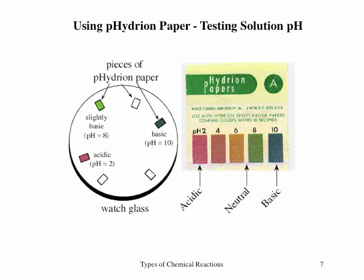The use of pH paper can help identify an acidic, neutral, or basic solution. A single strip of pH paper is torn into three or four pieces, the piece is put on a watch glass, and then a drop of test solution is transferred from the test tube or beaker onto one piece of pH paper. The appearance of a red color on the paper indicates the test solution is acidic, light brown indicates a neutral solution, and dark blue a basic one.